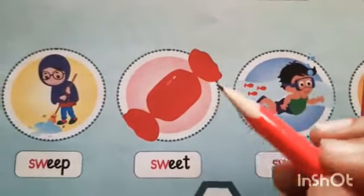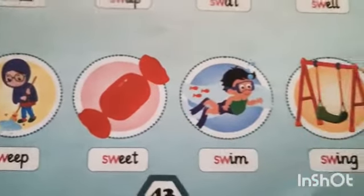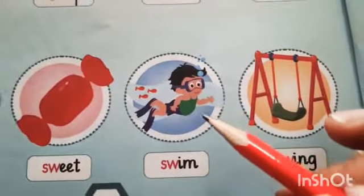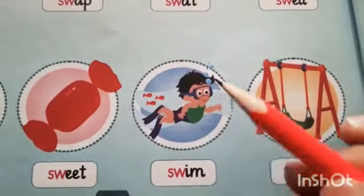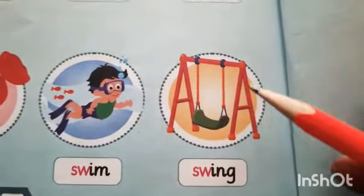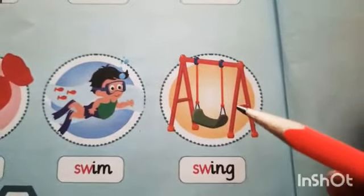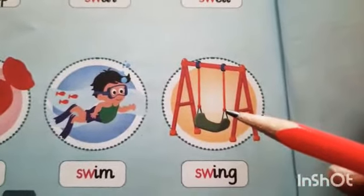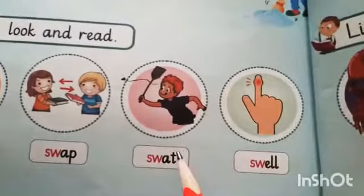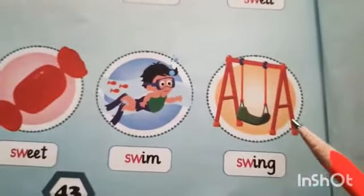And what is this? This is our favorite — sweet. Hum sab chok sakate hai na. And what is he doing? He is swimming. Toh swimming ke action ko kehte hai — swim. Swim. Swing. And what is this? This is a swing. Swing — our favorite. Humare school mein bhi na swing. Hum swing pe jate hain. Swing. Okay. Swap, swap, swat, swell, sweep, sweet, swim, swing.